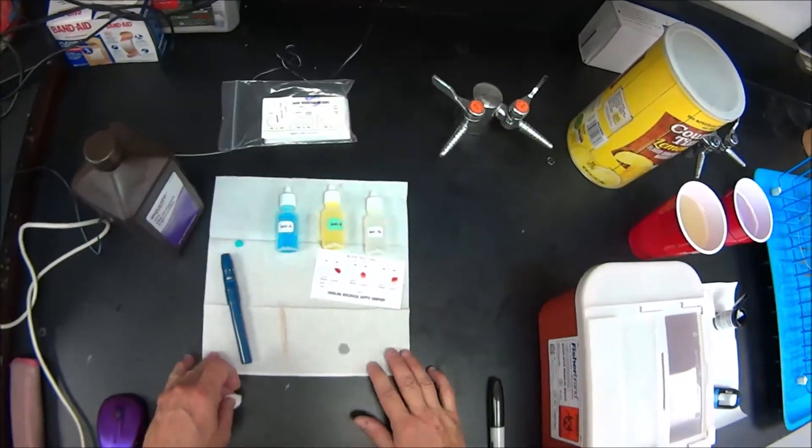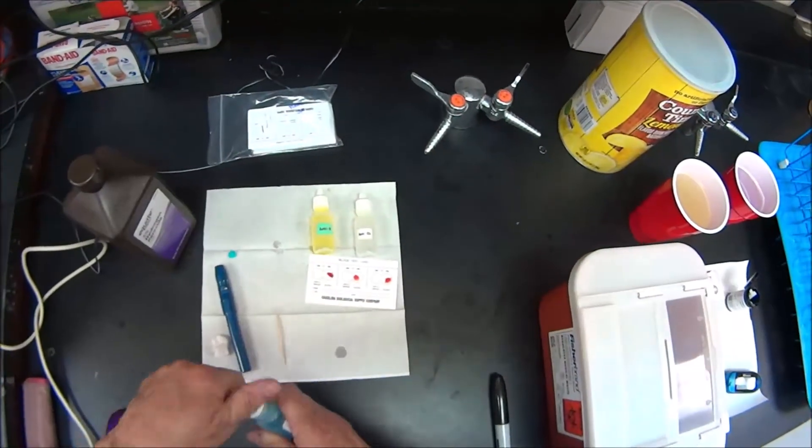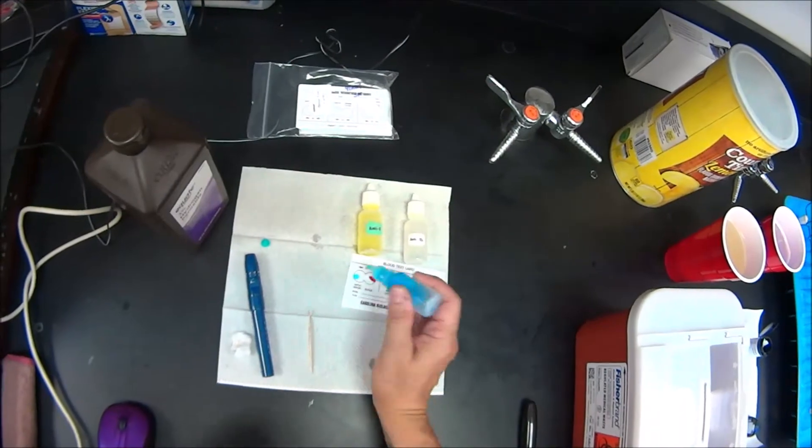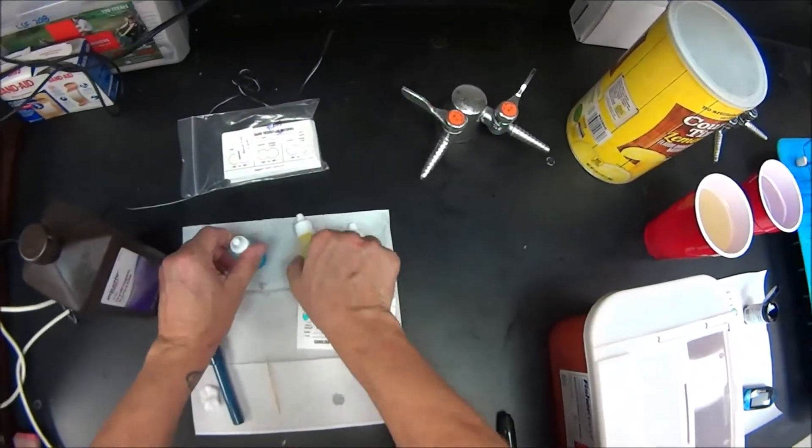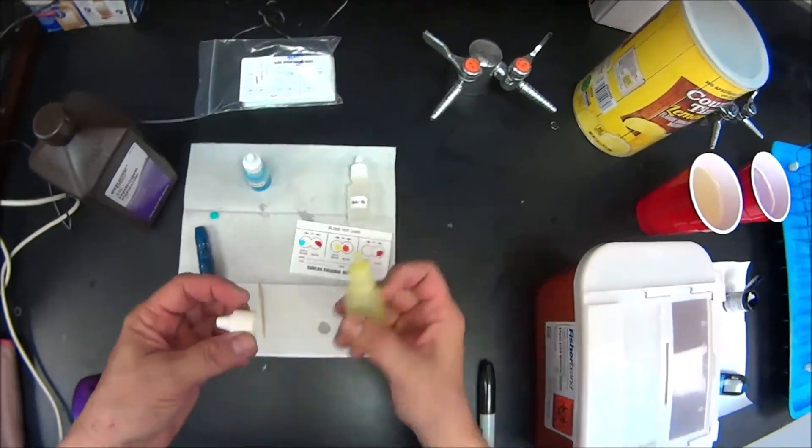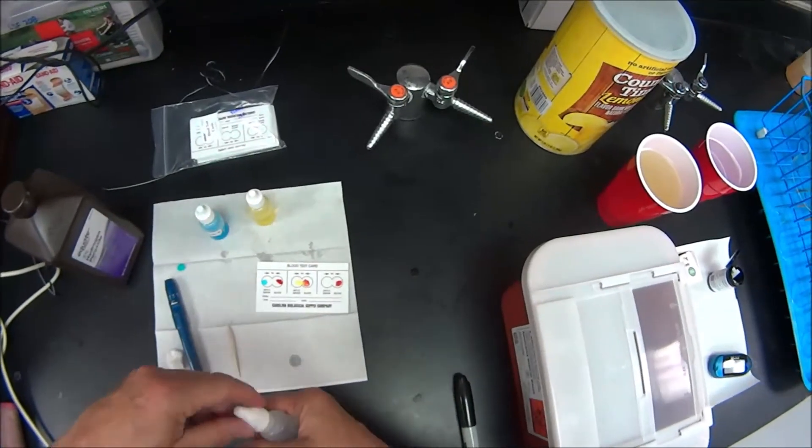Now, before anything dries on that card, I'm going to add the antibodies. So here's anti-A. Alright. Here is anti-B. The suspense is killing you, isn't it? Alright. And the anti-Rh is here. Okay, we are ready to go.